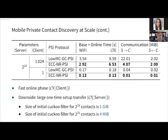To give you an idea of how expensive these protocols are: here we have timings for the online and base phases for two different protocols from our work, where the server set size is a quarter billion items and the client set size is either 1 or 1000. The times for both Wi-Fi and LTE connections are in the single-digit seconds, which is pretty good, and the communication is in the low megabytes — so the online and base phases are very fast.